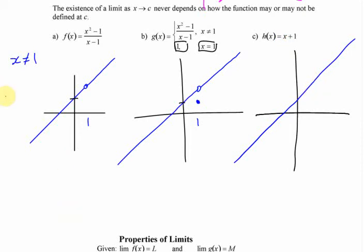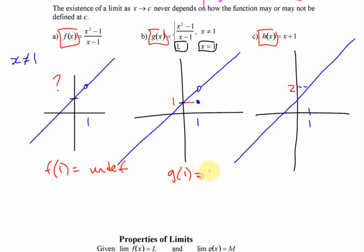The reason that these three functions are here is because of the value at 1. What's the value of this one at 1? The third one? The value of the third one at 1 is 2. What's the value of the second one at 1? 1, right? What's the value of the first one at 1? It's undefined. So we can say here that f of 1 is undefined. We can say that g of 1 is 1. And we can say that h of 1 is 2.